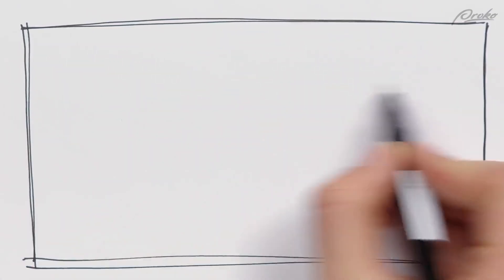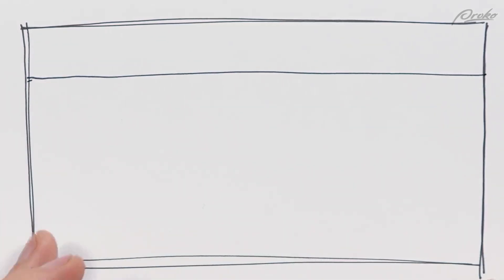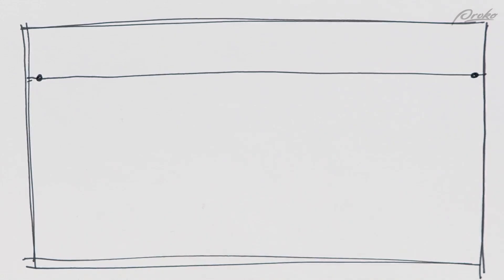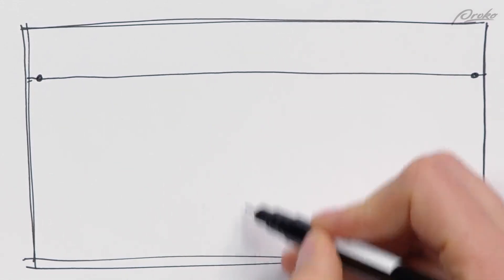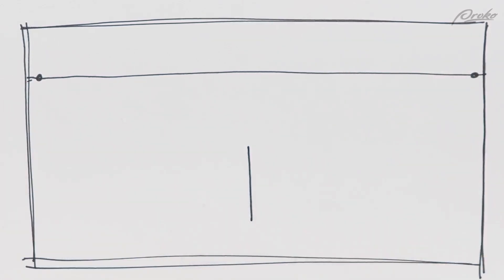Let's jump in and draw a box in two-point perspective. The first thing I like to do is establish my horizon line. We already learned this in the last lesson for one-point perspective, so let's not cover it again. In this example, I'm going to distribute the two vanishing points evenly — they're going to be here and here — and right in the middle, I'm going to place the edge of the box.